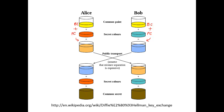Once Alice receives the intermediate color from Bob, she mixes it with her own private color to produce the final common secret color. Bob does the same thing — he receives Alice's intermediate color and mixes it with his private secret color to produce the same common secret color. They end up with the same color, which is their common secret. In the context of encryption, this will be their common encryption key they can use to encrypt and decrypt.